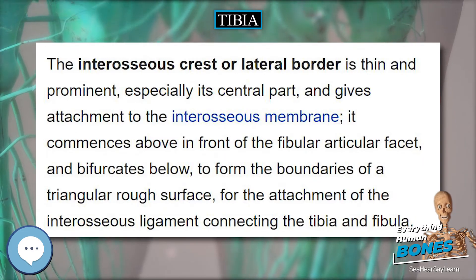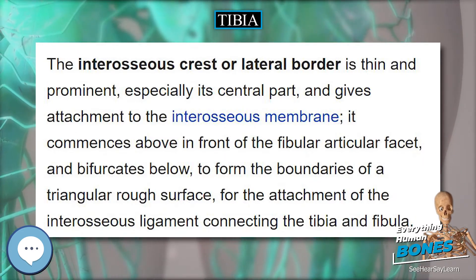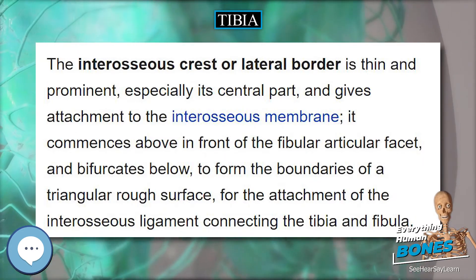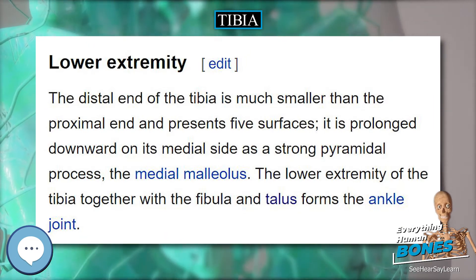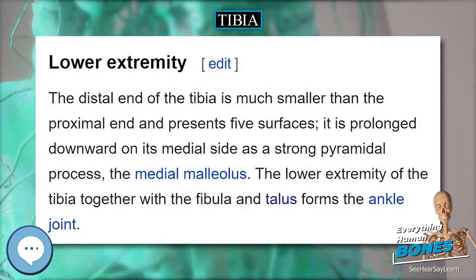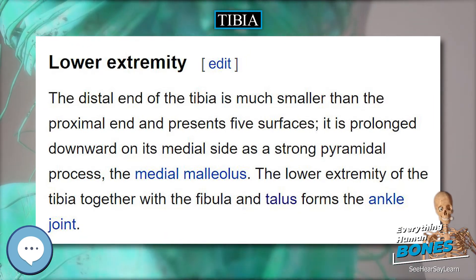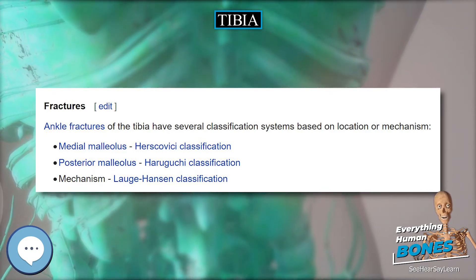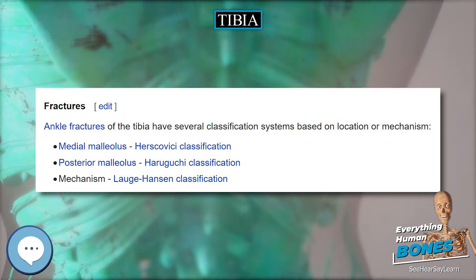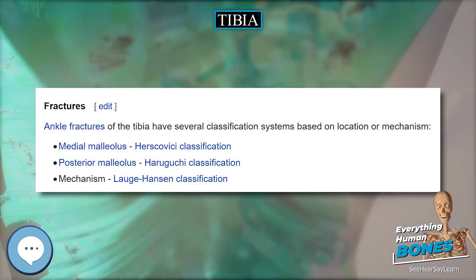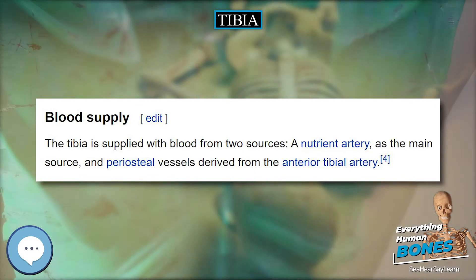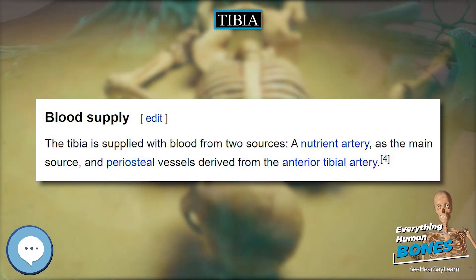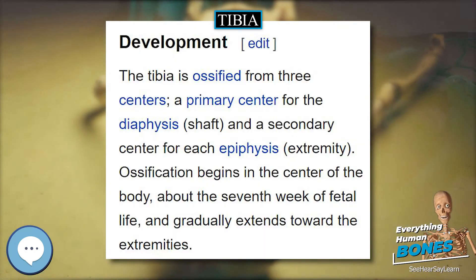The triangular area above this line gives insertion to the popliteus. The middle third of the posterior surface is divided by a vertical ridge into two parts. The ridge begins at the popliteal line and is well marked above, but indistinct below. The medial and broader portion gives origin to the flexor digitorum longus, the lateral and narrower to part of the tibialis posterior.